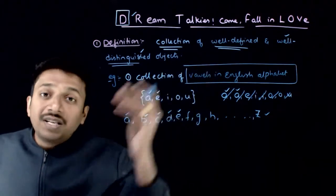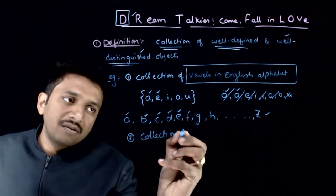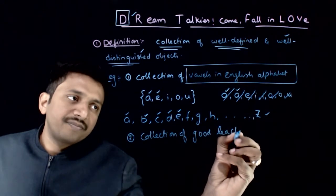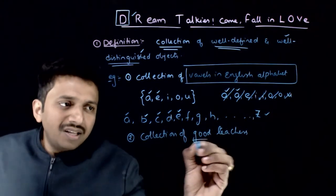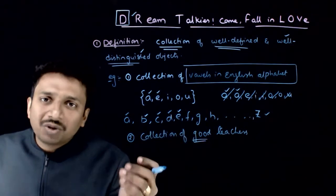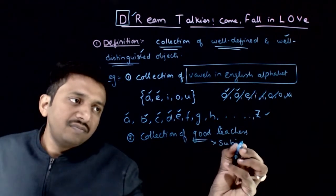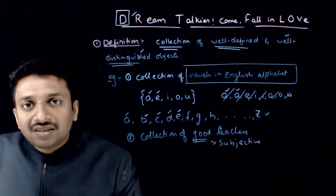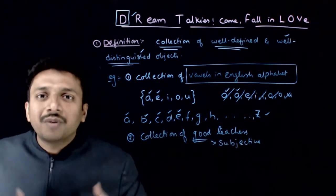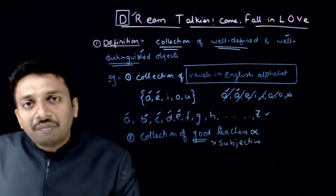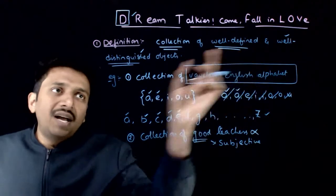Let us take an example where well-definedness is not satisfied. If I say I want the collection of good teachers, this is not a well-defined property because 'good' is subjective — some teachers you might feel are good and others might not. Good is subjective; it is not an objective word. Whether a teacher is good or not depends on subjective opinion, so such collections cannot be considered as mathematical sets. Once you say a collection is a set, it has to be well-defined and well-distinguished.